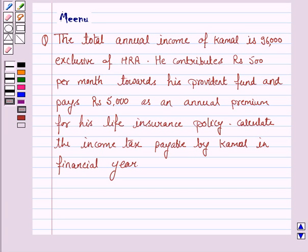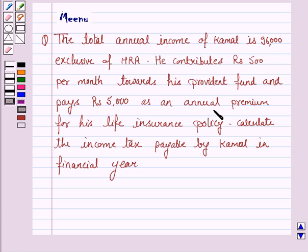Hello and welcome to the session. Let us discuss the following question. The total annual income of Kamal is Rs. 96,000 exclusive of HRA. He contributes Rs. 500 per month towards his provident fund and pays Rs. 5,000 as an annual premium for his life insurance policy.